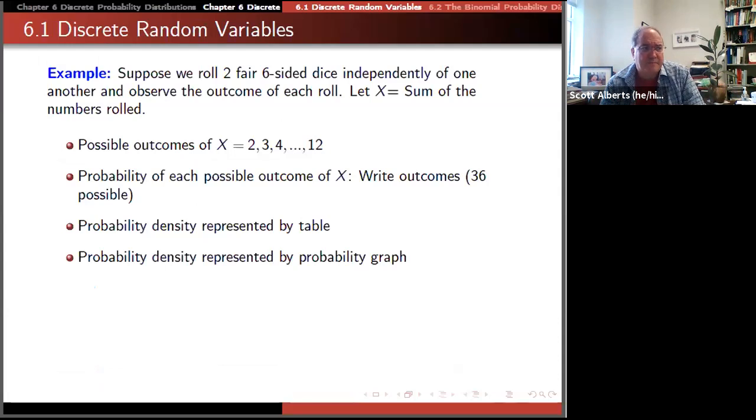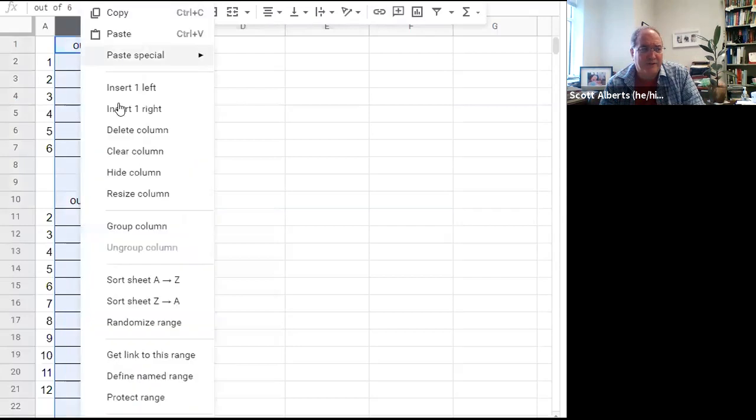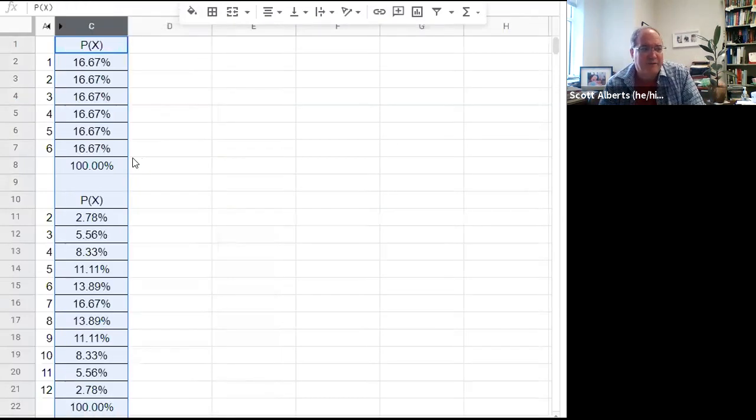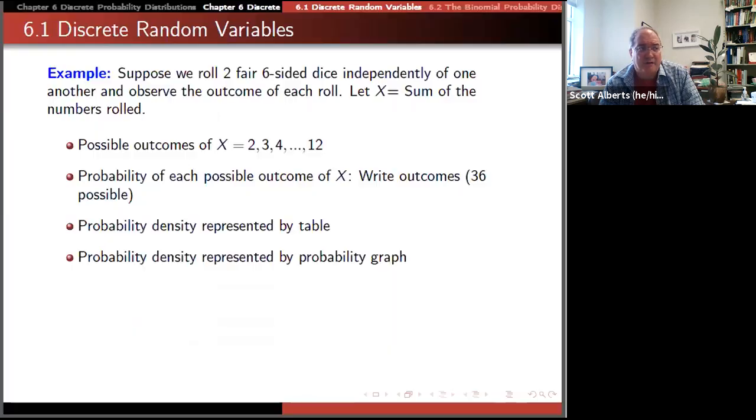You can see that all of these probabilities are in fact between zero and one. And they add up to a hundred. I just did the little sum command there to get that. So this is one description of a random variable. The idea that you have a list of outcomes and the probabilities for each. So this chart describes a random variable.